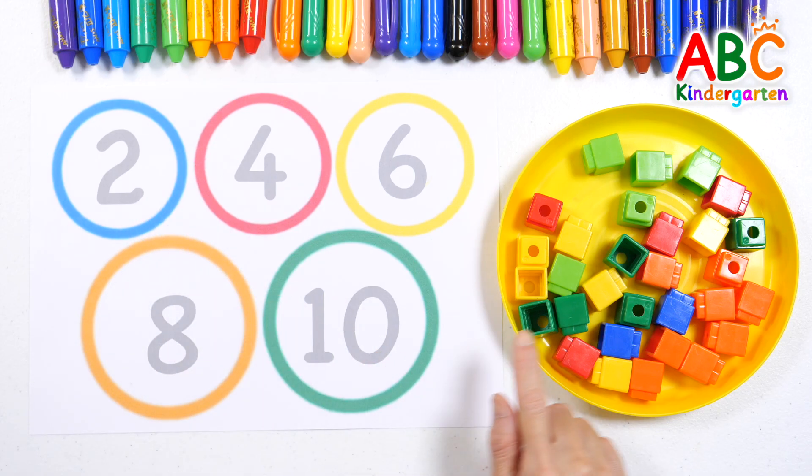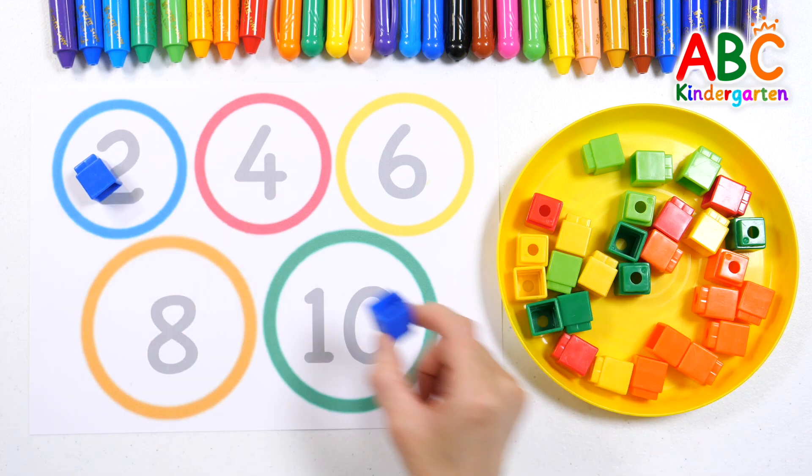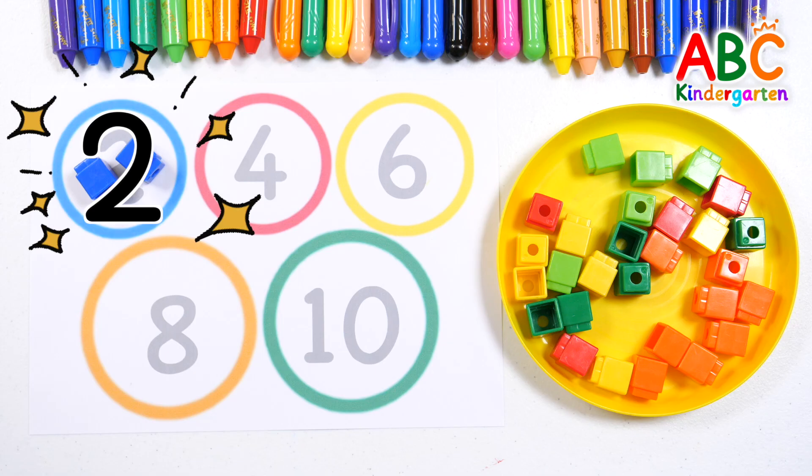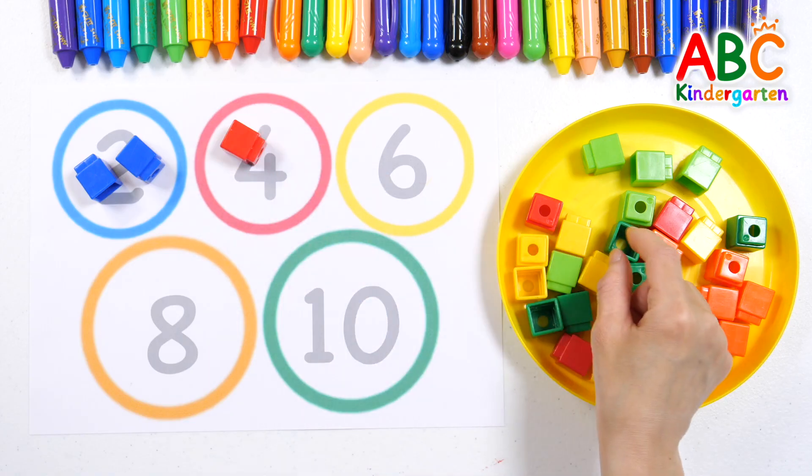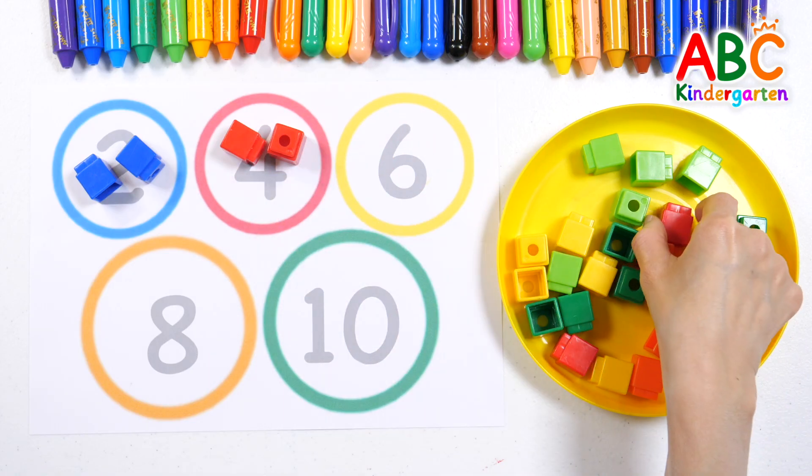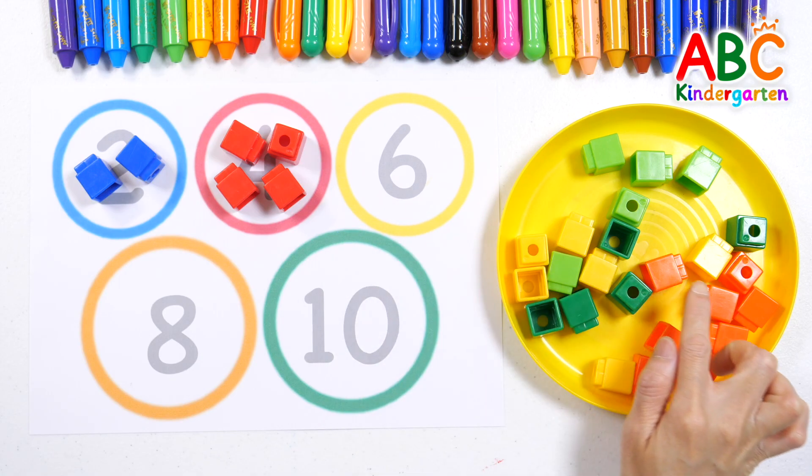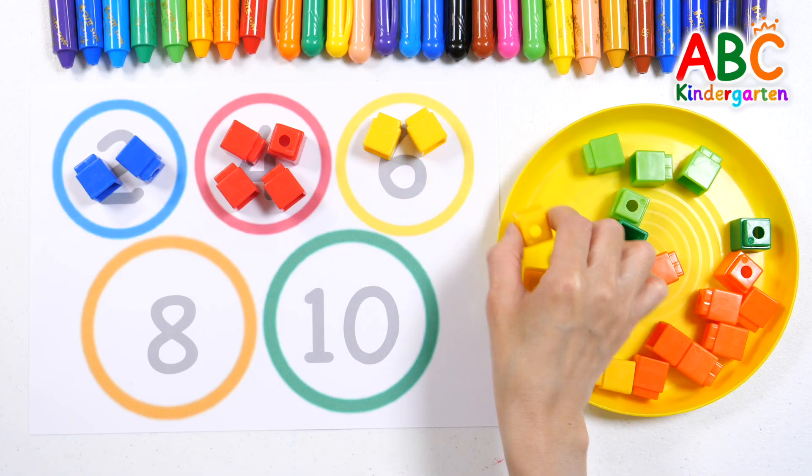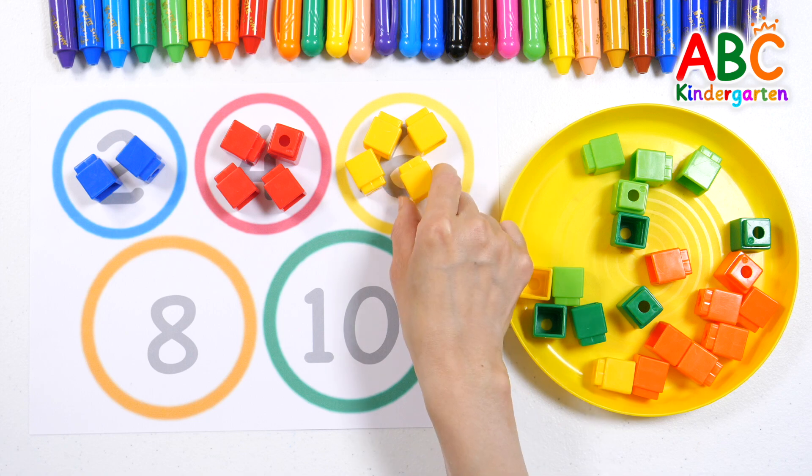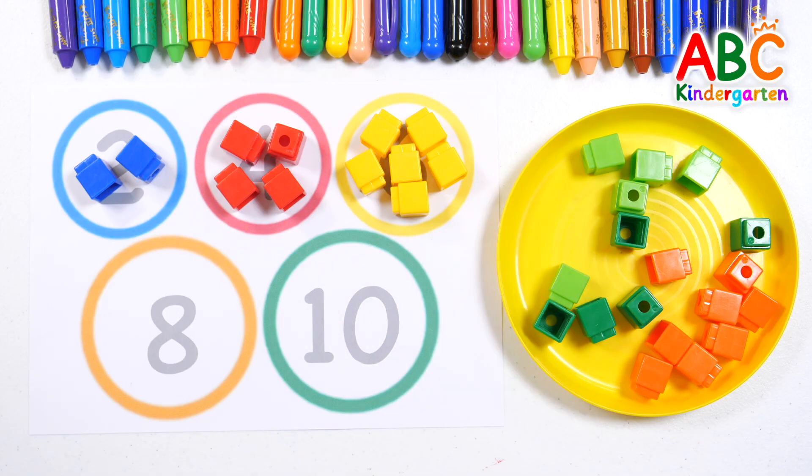Let's find two blue blocks. One, two. Two. Let's find four red blocks. One, two, three, four. Four. Let's find six yellow blocks. One, two, three, four, five, six. Six.